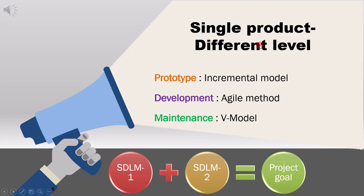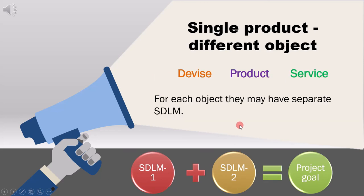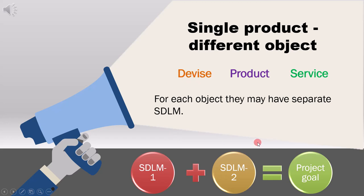You had a single product and different decisions at different levels. In the second example, you have a single product but different objects, yet you are still combining different models to achieve the project goal. Suppose a company creates a device, develops a product, and provides a service. For each of these objects, they can use separate software development lifecycle models — one model for service, another to develop the product, and yet another to manufacture the device. In this video, we saw examples of how different models can be combined, or test levels and activities combined, to achieve a project goal or context.